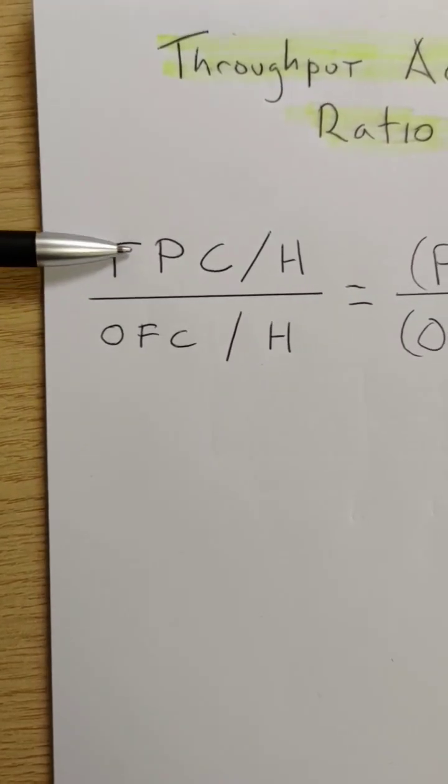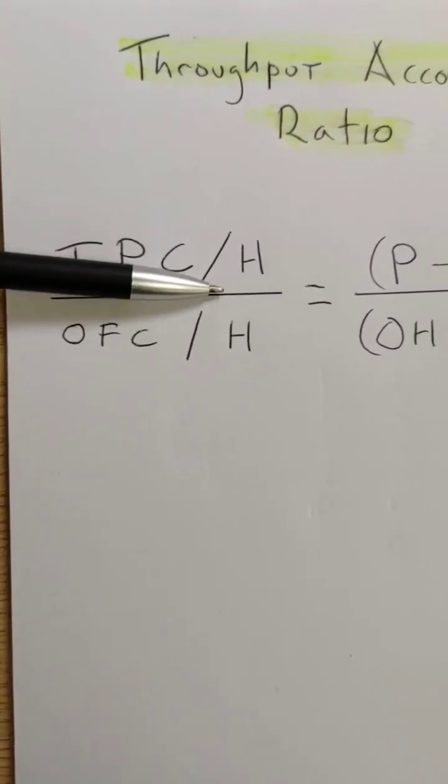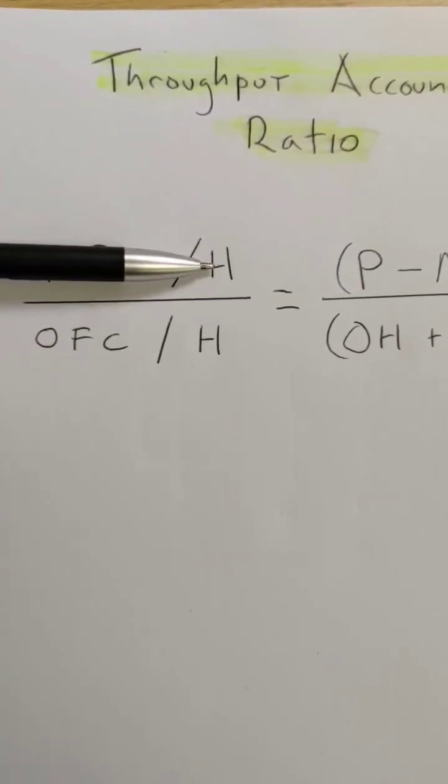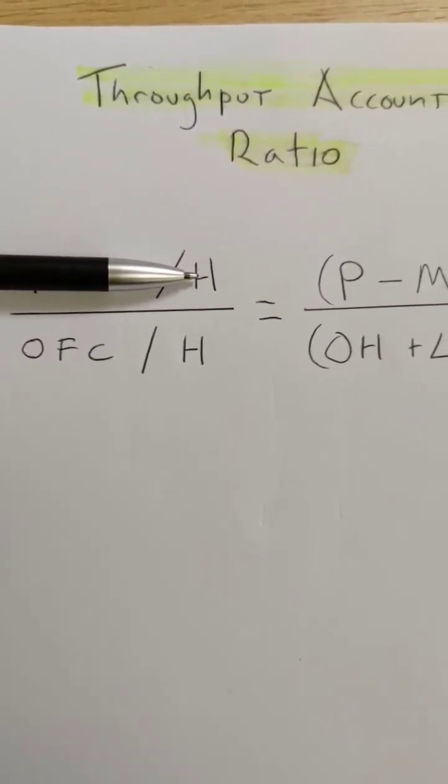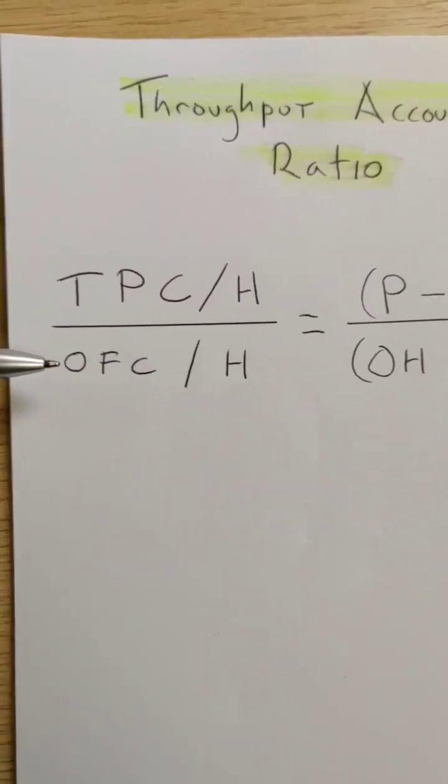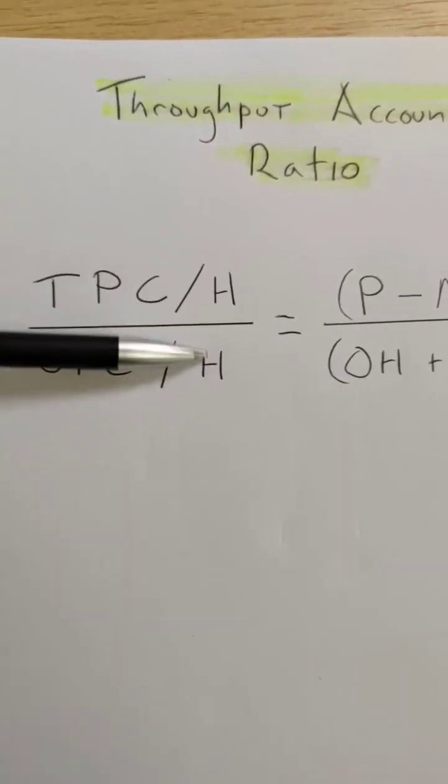which is throughput contribution per hour, that's on the bottleneck resource, that's not the total production time, over the other factory costs per hour.